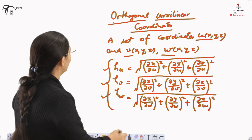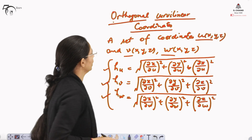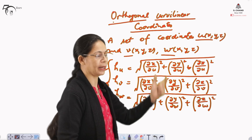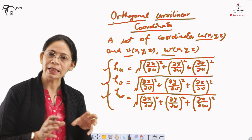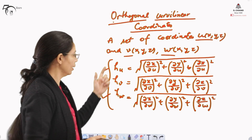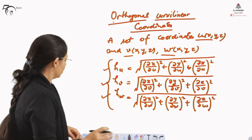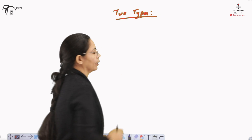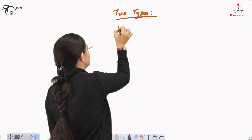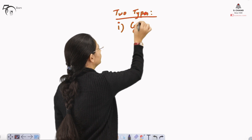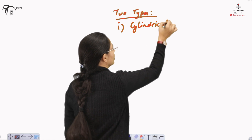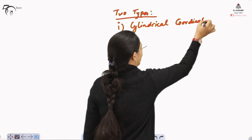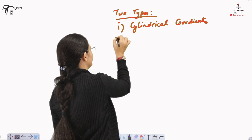We have understood what orthogonal curvilinear coordinates mean: the directions represented by the set of coordinates are orthogonal to each other, and with each coordinate there is one scalar attached. There are two types of orthogonal curvilinear coordinates: the first is cylindrical coordinates, and the second is spherical coordinates.